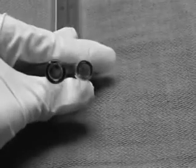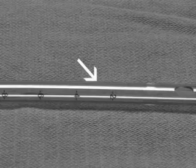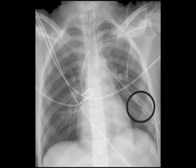The chest tube is sized according to its internal diameter. The length of the tube is marked with numbers to indicate distance into the chest wall. Additionally, there are several drainage holes at the distal end. A radio-opaque stripe runs along the length of the tube and outlines the most proximal drainage hole. This is used to confirm correct placement of the chest tube in the pleural space on a chest x-ray.